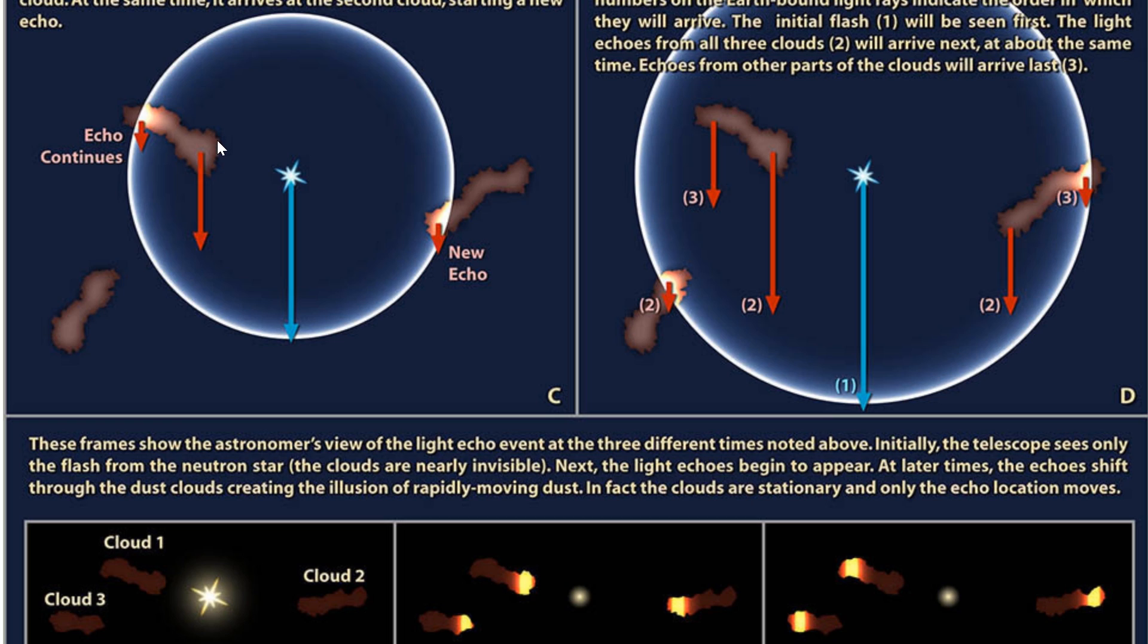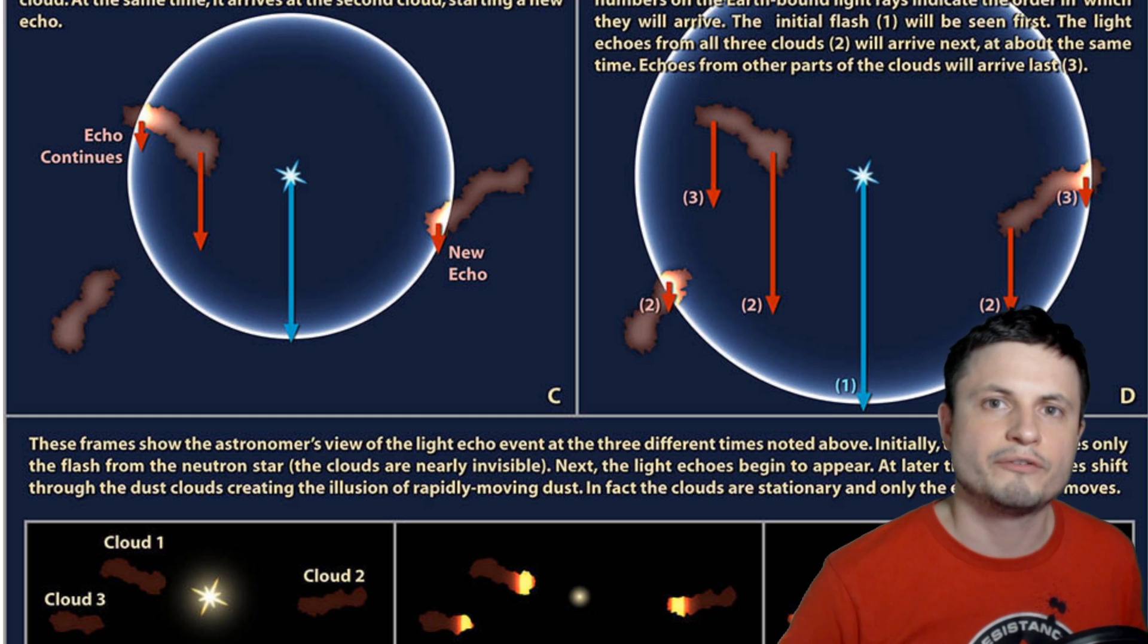So even though originally the light hit this cloud first, and then it hit this one here, by the time the light makes it to Earth, it's actually going to appear as if this other faraway light moves much slower than the light coming from here, which is not true at all. In other words, it's a kind of visual illusion.